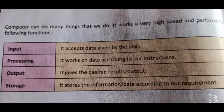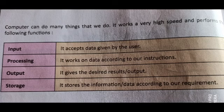A computer can do many things that we do. It works at a very high speed and performs the following functions. The functions of a computer are: input, processing, output, and storage. These are the main functions. The first function is input — it accepts data given by the user. The input consists of data and instructions we enter into the computer.